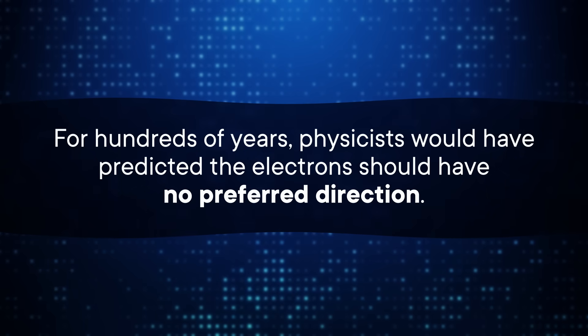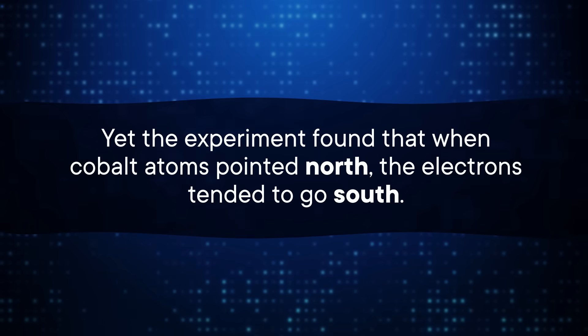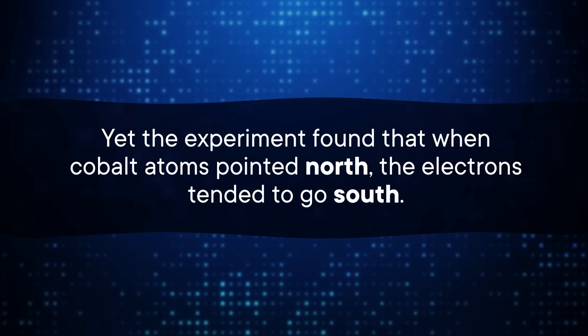There were two possible outcomes. Either the electrons would fly to the north and south equally, indicating that parity doesn't matter, or they would favor one direction, meaning that it does. For hundreds of years, physicists would have predicted no preferred direction. Yet the experiment found that when cobalt atoms pointed north, the electrons tended to go south. This proved the weak force behaves differently than the other three fundamental forces, and that nature does care about parity — showing that right versus left is more than just a human construct.